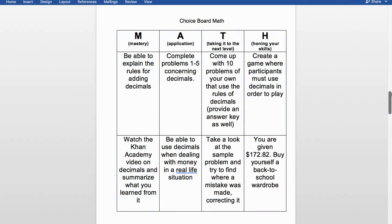Another honing-skills activity: students are given $172.82 to buy themselves a back-to-school wardrobe. They can go online to a store they like and budget themselves. This teaches decimals, how to meet a budget, and how to plan purchases — because if you buy boots for $150, you've only left yourself $22 for the rest of your wardrobe, so kids have to think about the management of what they're going to buy.